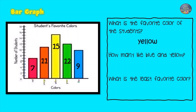How many like blue and yellow? There are nine for blue, while fifteen like yellow. Nine plus fifteen is twenty-four.